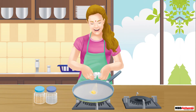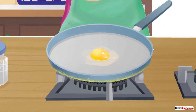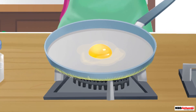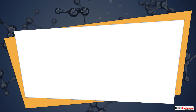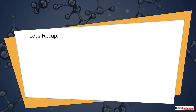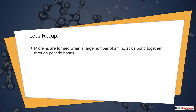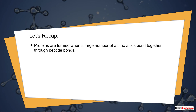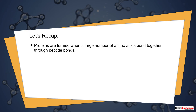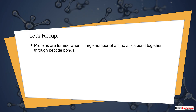When we cook an egg, the egg white gets coagulated. This is because of the denaturation of proteins present in the egg white.